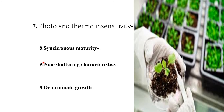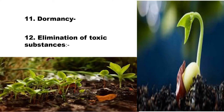Synchronous maturity is highly desirable in crops where several pickings are necessary, such as moong bean, pigeon pea, and cotton. Non-shattering characteristics are of great value in crops like moong, castor, and soybean where shattering is a major problem. Development of varieties with determinate growth is desirable in crops like moong, pigeon pea, and cotton.